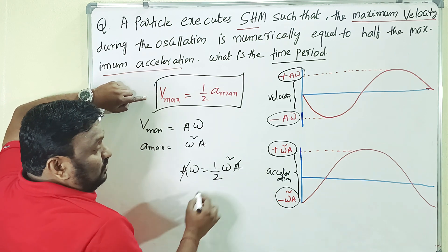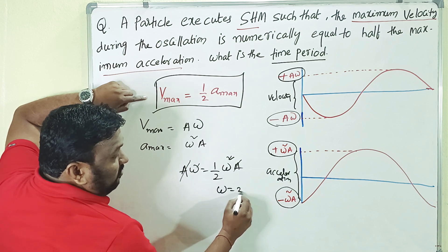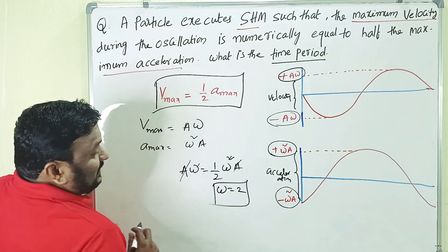Now, children, what you can understand? A, A cancel. Omega squared, omega cancel. Then what you get? Omega is equals to what you get? 2. Omega is equals to 2 you will get.